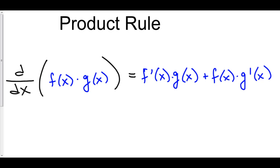One of our rules of derivatives is called the product rule. It says that if you take the derivative of some function f times another function g, then you take the derivative of your first function multiplied by your second function, plus the first function times the derivative of the second function. So: derivative of first times second, plus first times derivative of second.